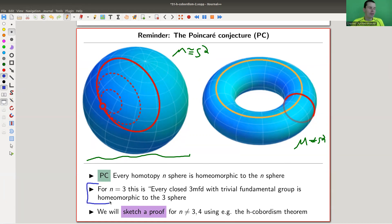More generally, as soon as you have something that is the homotopy of the n-sphere, then it is actually the sphere.